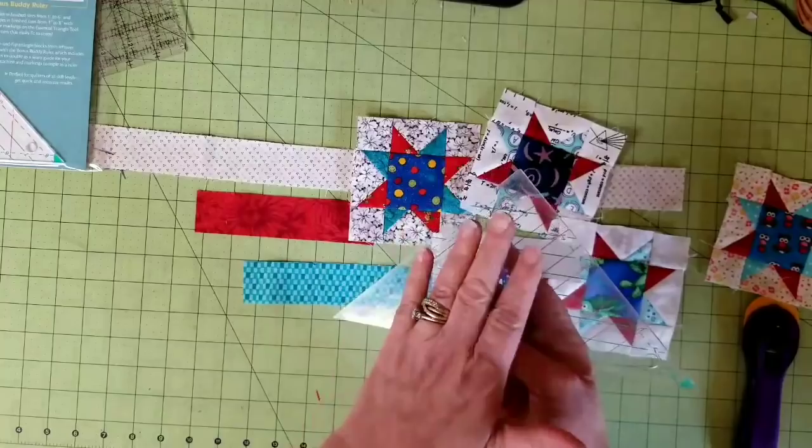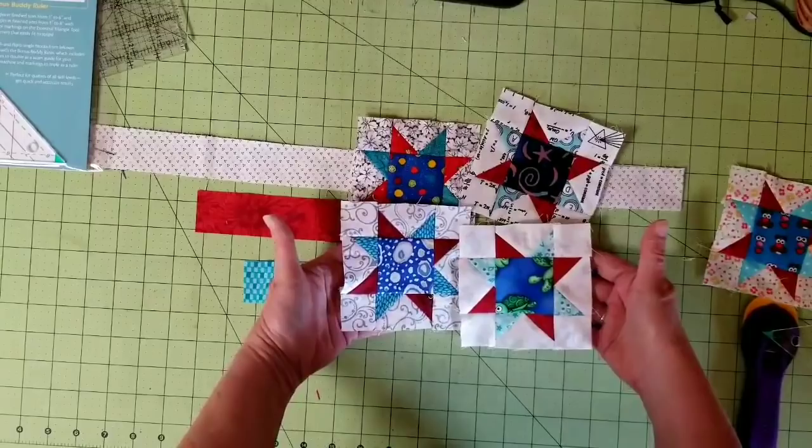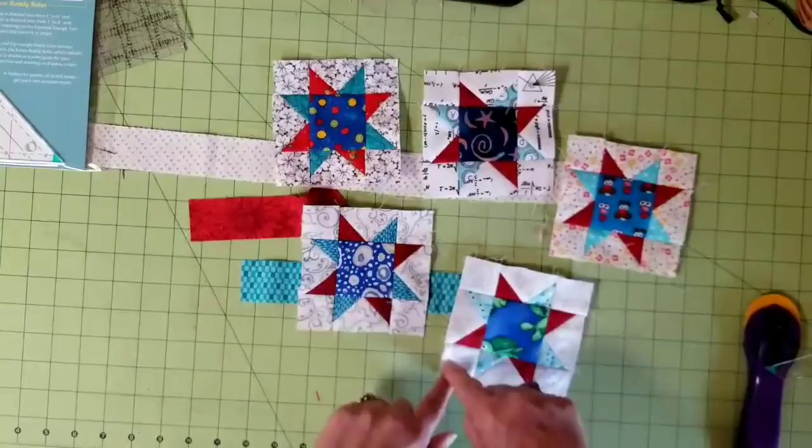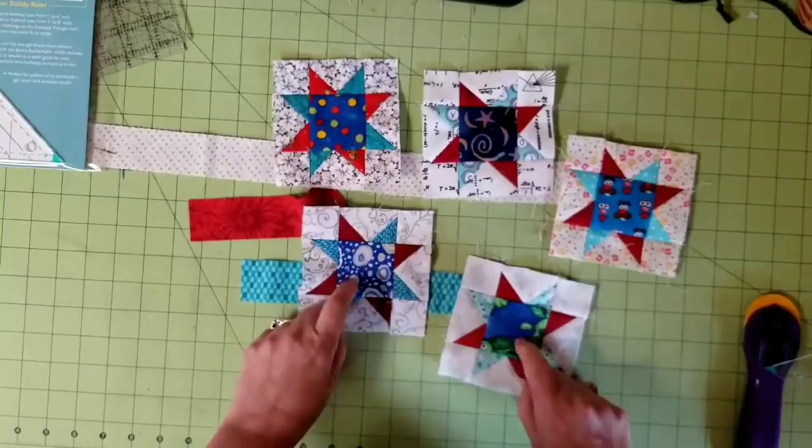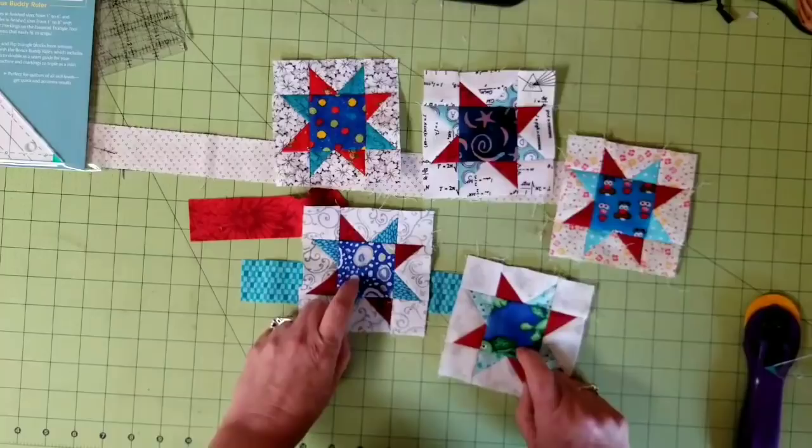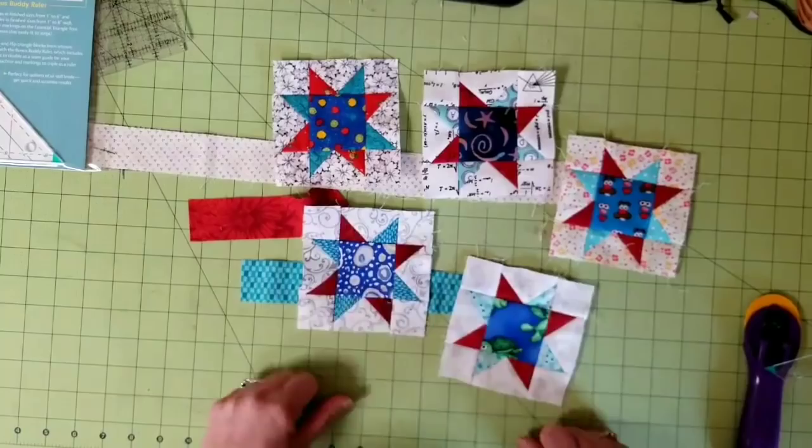Now, with these little stars, we're going to need four sets of flying geese for each. You can tell by these stars that I have kept the background consistent in each star. I have used one red for four star points and one aqua for the other four star points. The center squares came out of my two and a half inch scrap user system squares box. Everything that we've done so far has come from scrap user system sizes.